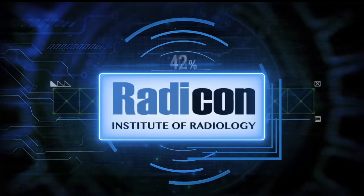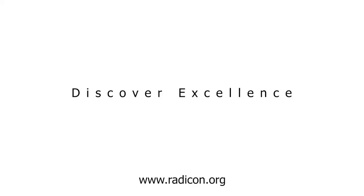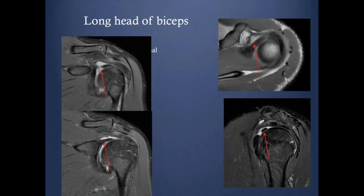You are watching Reticon. Inside the joint, the long head biceps tendon has an extra- and intra-articular portion. The intra-articular portion is very important and commonly shows pathology. It usually originates from the superior labrum, goes almost horizontal, and then makes an almost 90-degree turn to the bicipital groove.